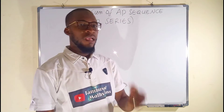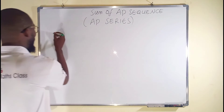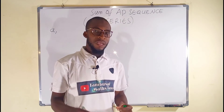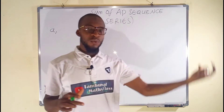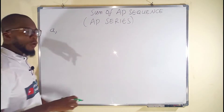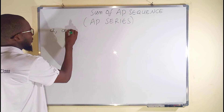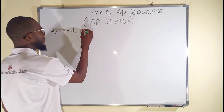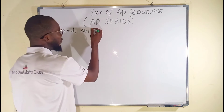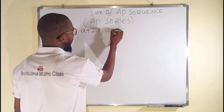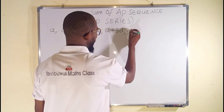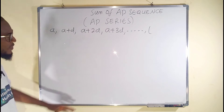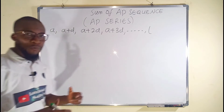We have learned so far that the first term of an arithmetic progression sequence is denoted by a. By adding the common difference d to every term, it yields the subsequent term. Therefore, the second term is a plus d; adding d again gives the third term a plus 2d; the fourth term is a plus 3d. If you keep going, you eventually reach the last term, which is denoted by L.